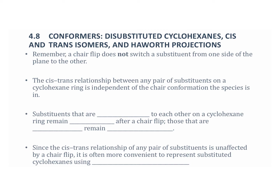We've talked about cyclohexanes with just hydrogens and monosubstituted cyclohexanes, but we can also have disubstituted cyclohexanes. With disubstituted cyclohexanes we have to take into account the relationship of each substituent on the plane of the ring. A chair flip does not switch the substituents from one side of the plane to the other, so the cis-trans relationship between any pair of substituents on a cyclohexane ring is independent of the chair conformation.